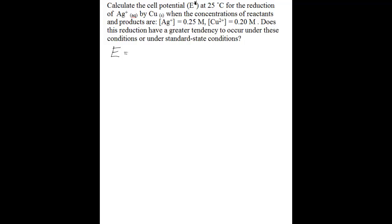Because this is the relationship you're going to use: the cell potential under non-standard conditions is equal to the cell potential under standard conditions minus 0.0592 divided by N, which is the moles of electrons transferred in the redox reaction, times the log of Q, where Q is the reaction quotient. So the first thing to do is to find the standard cell potential.